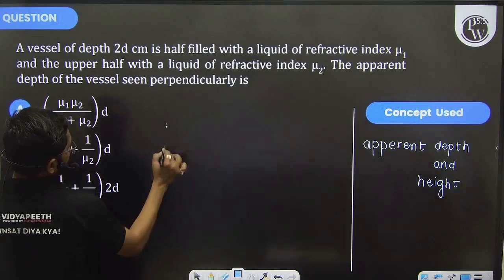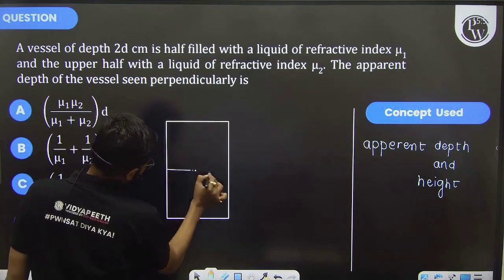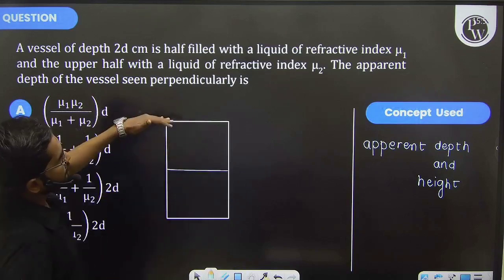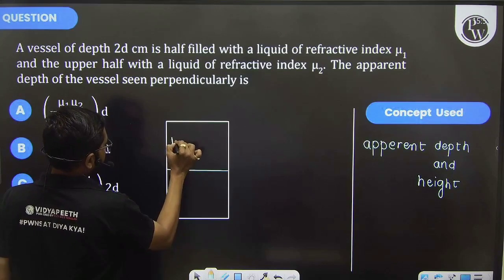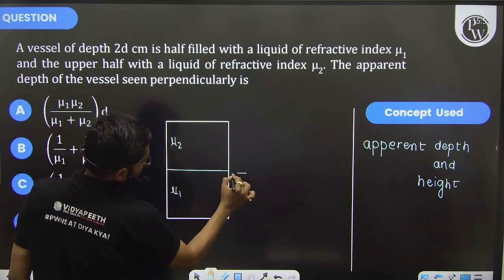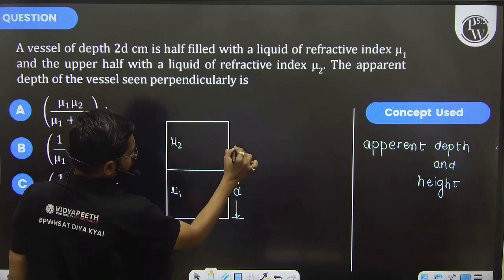You have been given a vessel. Let's take this is our vessel. Half of the vessel is filled with the liquid of refractive index μ₁, remaining half is μ₂. So this total depth has been distributed into two parts.